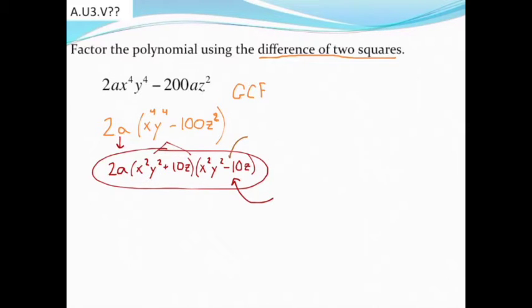However, this one that has a subtraction sign, since that's a difference, you may be able to factor a second time with difference of two squares. This part, we could do the square root of it. That would become x, y. However, I cannot do the square root of 10.